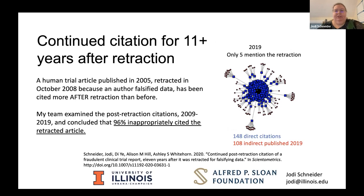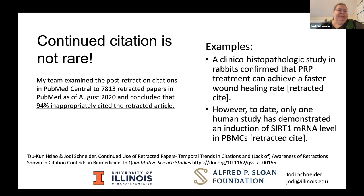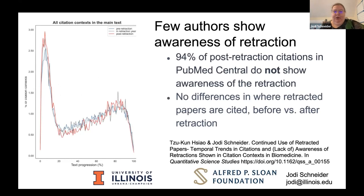Of those citations after retraction from 2009 to 2019, 96% inappropriately cited the retracted article. Almost everything is inappropriate — five of the articles up to 2019 mentioned the retraction. That 96% figure is just for one particular article, but it turns out for biomedicine, that's about what we see in the literature as a whole. We did a study published in Quantitative Science Studies last year where we looked at 7,800 retracted papers in PubMed and 13,000 citations to them that were open access in PubMed Central. 94% of those inappropriately cited the retracted article.